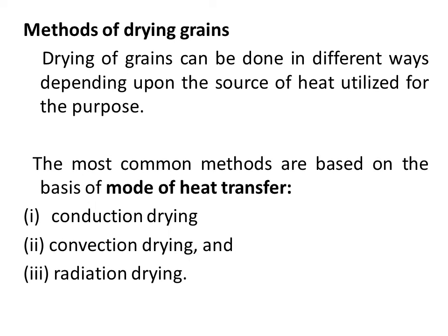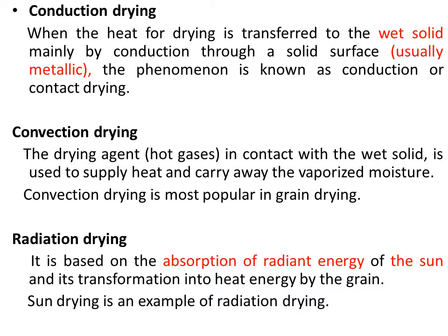When we consider grain drying, there are certain modes of heat transfer that carry out the drying process. The first is conduction drying, the second is convection drying, and the third is radiation drying. In conduction drying, heat is transferred between two materials of the same nature — when the medium is the same and heat transfer is happening, that is the conduction method.